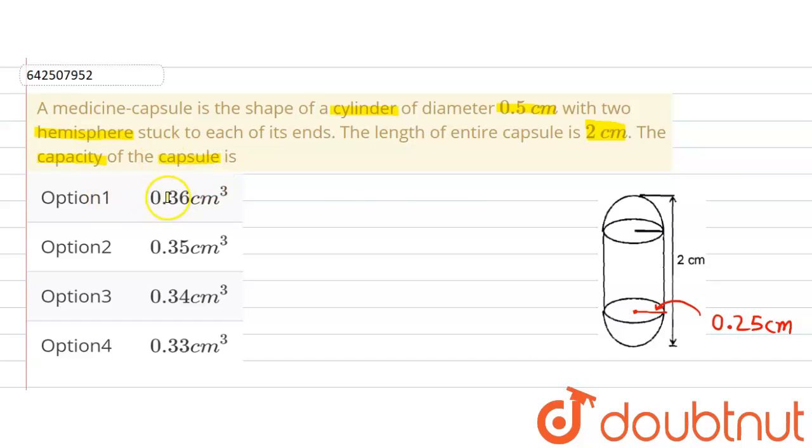We are given the options. Option 1 says 0.36 cm³. Option 2 says 0.35 cm³. Option 3 says 0.34 cm³. And option 4 says 0.33 cm³.